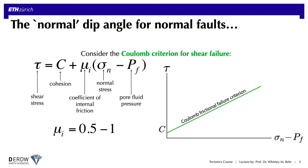This is the equation of a line that will look like this, with shear stress on the y-axis and effective normal stress on the x-axis. The slope of this line is μi, which experiments indicate ranges from about 0.5 to 1 for nearly all rock types, and the y-intercept is the cohesion.